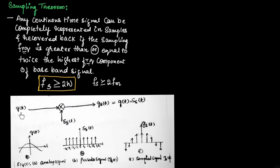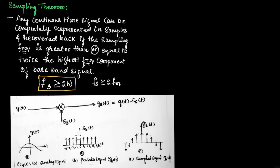Let us consider a signal G(t) and the periodic impulse train S_delta(t). This signal G(t) is sampled using the periodic impulse train to obtain the sampled output Gs(t), which is equal to G(t) multiplied by S_delta(t). This figure shows an example of sampling of signal G(t), where figure (a) represents the continuous time signal G(t) and figure (b) represents the periodic impulse train. When G(t) is sampled using this periodic signal, we obtain the sampled signal Gs(t).